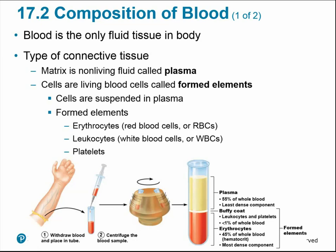Blood is actually considered a connective tissue — the only fluid tissue in the body. Cells work together to form tissues, and different types of cells work together in blood to form this fluid tissue. The matrix is the non-living fluid portion called plasma, and everything else in the blood is referred to as a formed element — cells and platelets suspended in the plasma fluid. Formed elements include erythrocytes (red blood cells), leukocytes (white blood cells), and platelets.